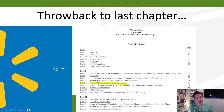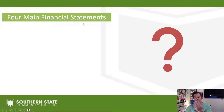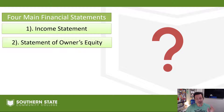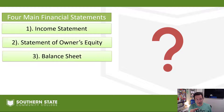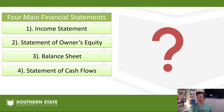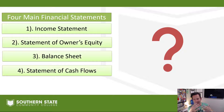If you think back to last chapter, we gave an intro to the financial statements and talked about the different types. There are four main financial statements — the four horsemen of the accounting apocalypse as it were: the income statement, the statement of owner's equity, the balance sheet, and the statement of cash flows. We showed you what they look like but didn't actually make them.